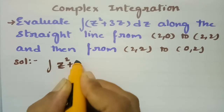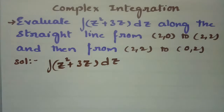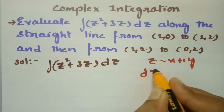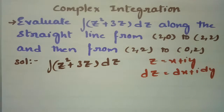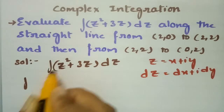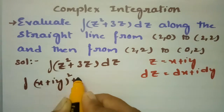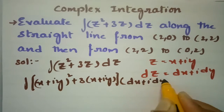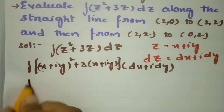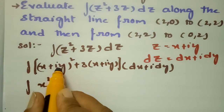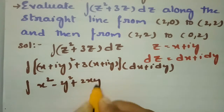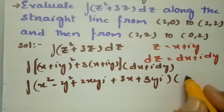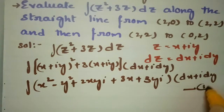We are going to integrate z squared plus 3z dz. As you know, z is nothing but x plus iy, and dz is equal to dx plus i dy. If I transform this in terms of x and y, then z squared is (x+iy) squared which expands as x squared minus y squared plus 2xyi, plus 3x plus 3yi, multiplied by dx plus i dy. This is equation number 1.